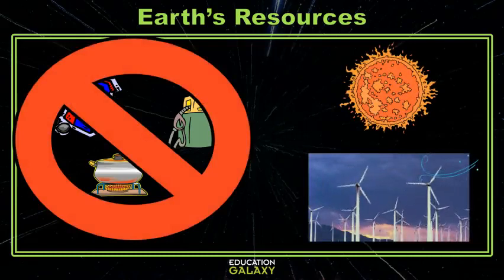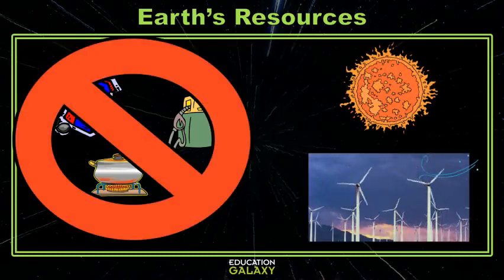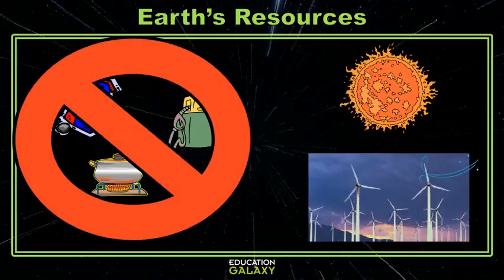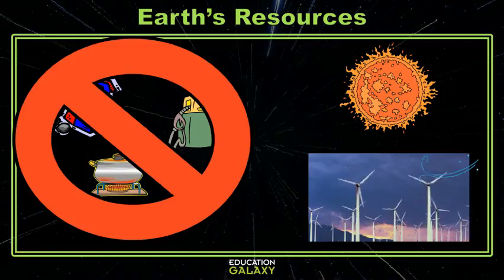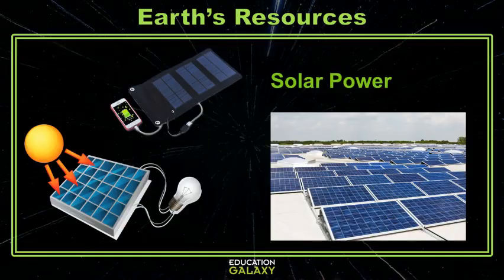Every day more and more things are starting to use electricity produced by two infinite and inexhaustible resources: sunlight and wind. Solar panels have been around since the 1950s, but they have come a long way in becoming more effective, cheaper to make, and having a longer lifespan than the first models.